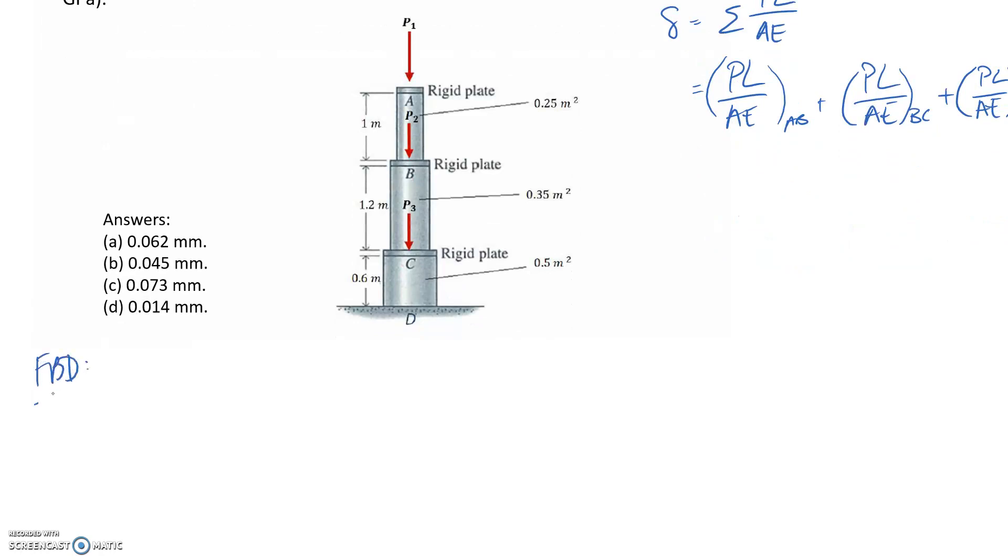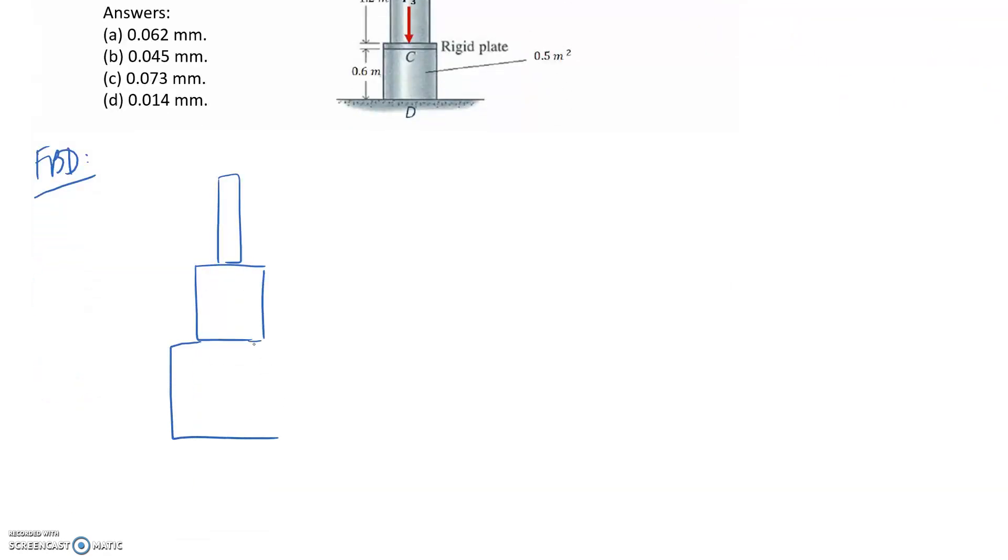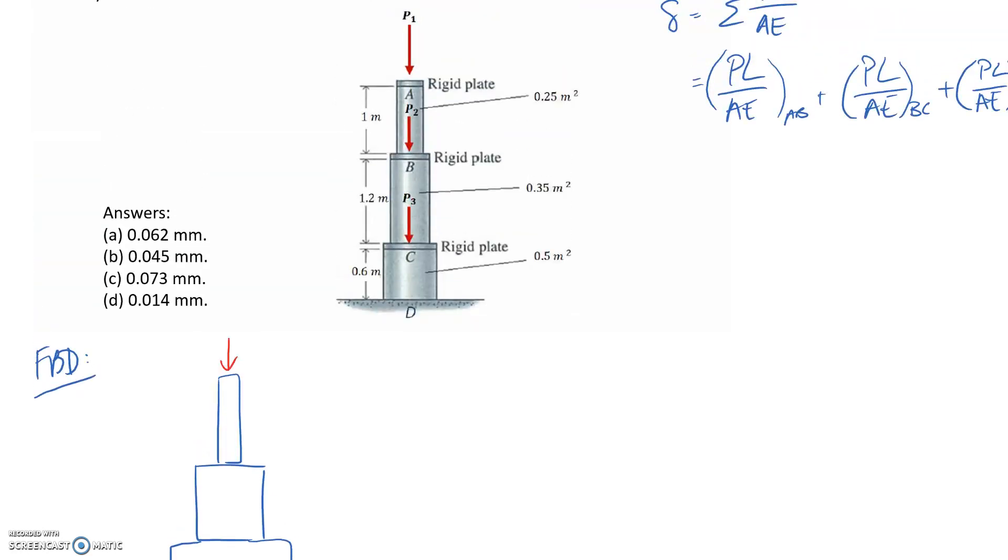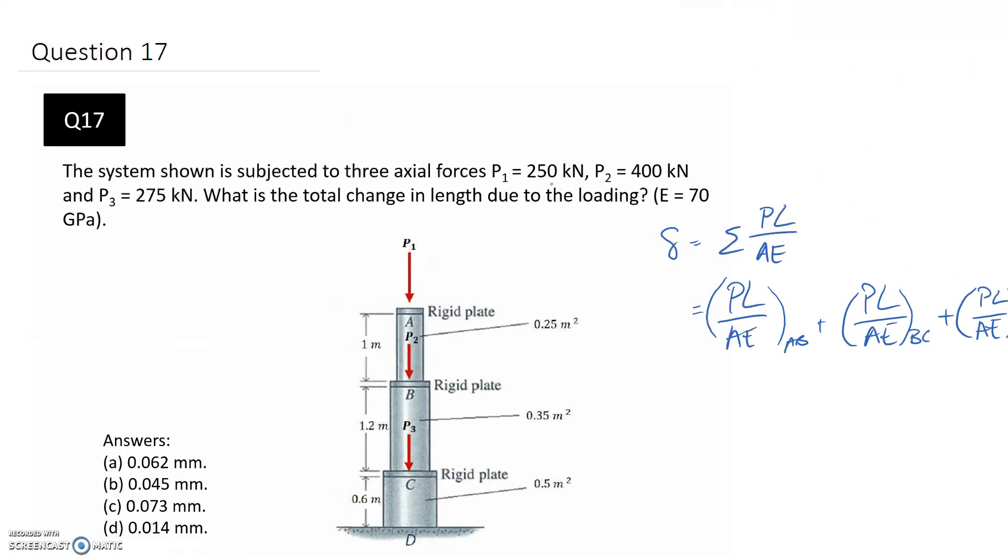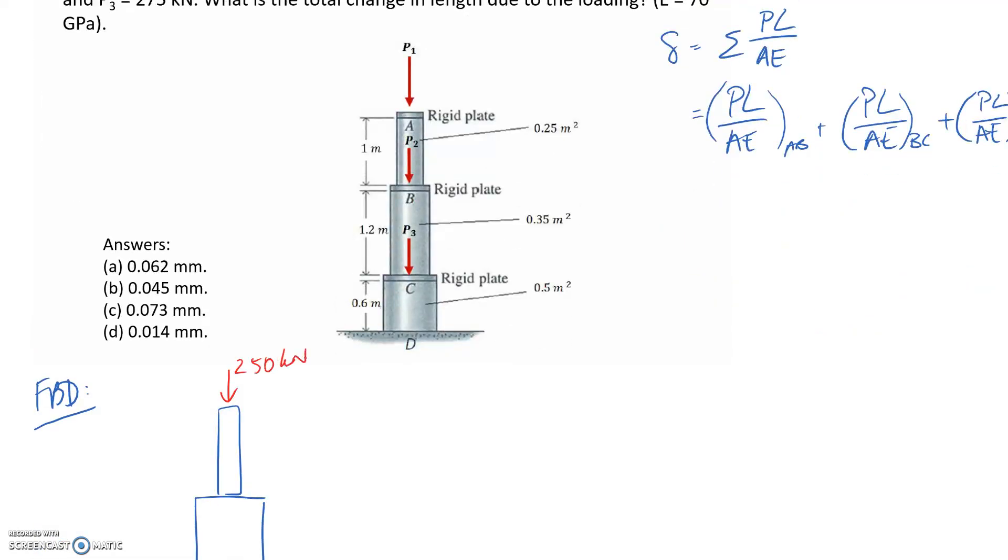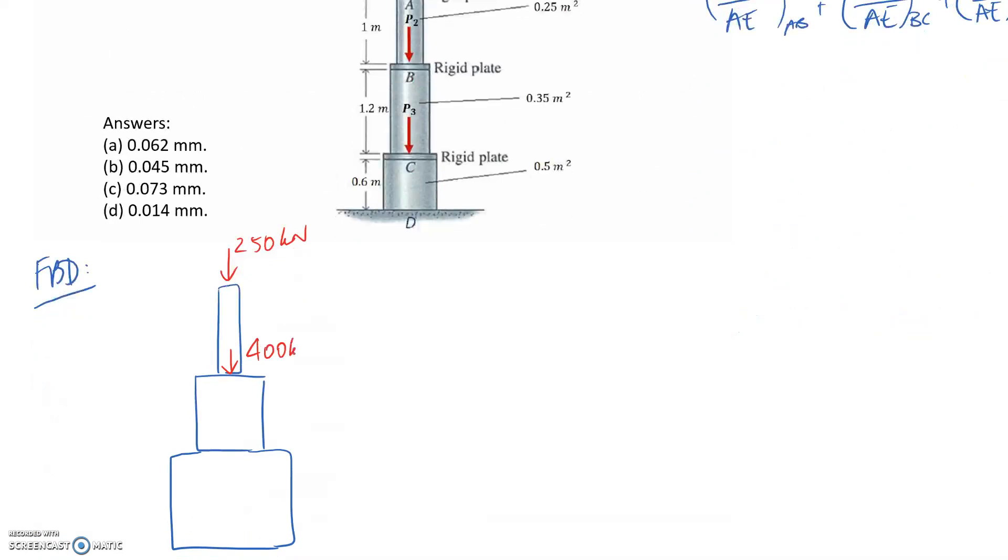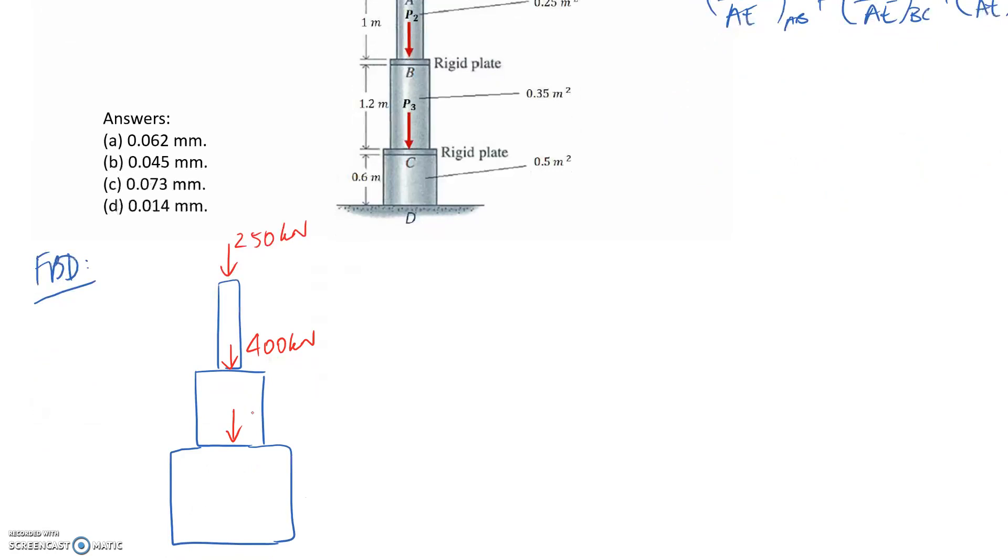Drawing the free body diagram, P1 is at the top at 250 kilonewtons. The next one is P2 at 400 kilonewtons, and P3 is 275 kilonewtons. At the bottom is a fixed support.